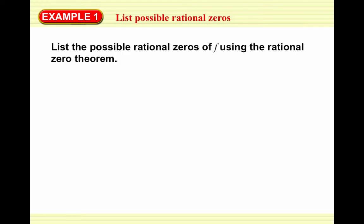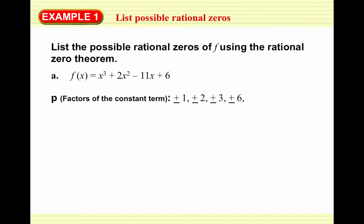We're going to list all possible rational zeros — these won't all be zeros, but they're the possible ones. We have f(x) = x³ + 2x² - 11x + 6. We start by finding our p's, the factors of the constant term 6: plus or minus 1 paired with plus or minus 6, plus or minus 2 paired with plus or minus 3. Four and five don't work, and then of course 6, and anything larger doesn't need to be considered.